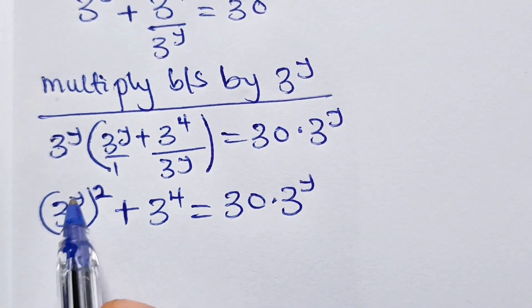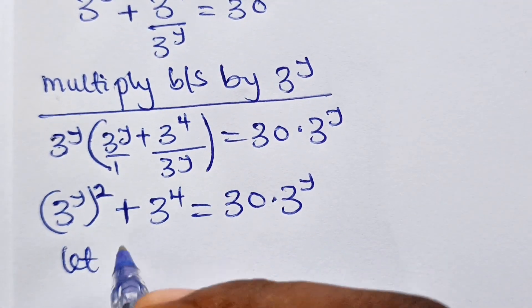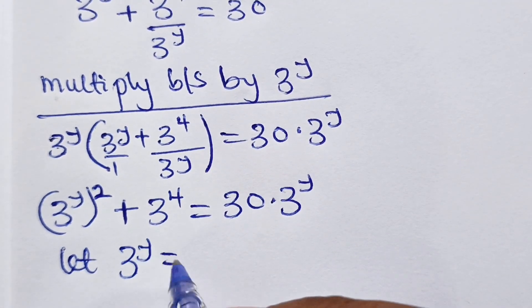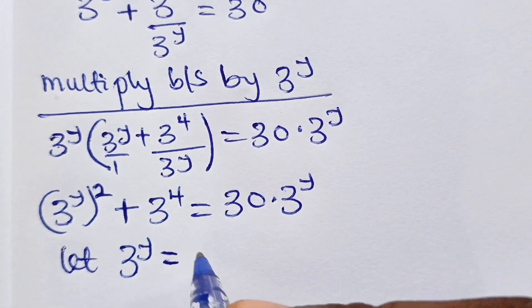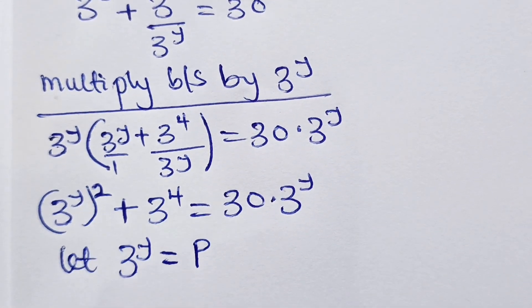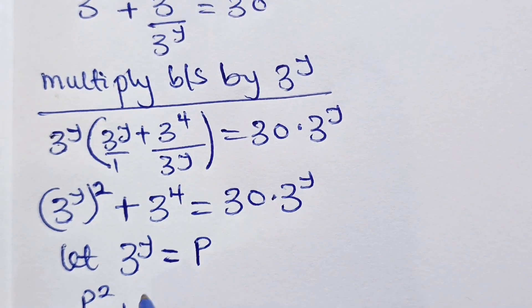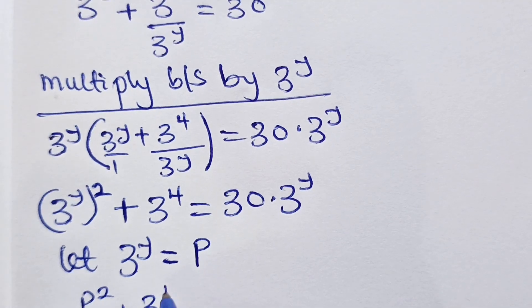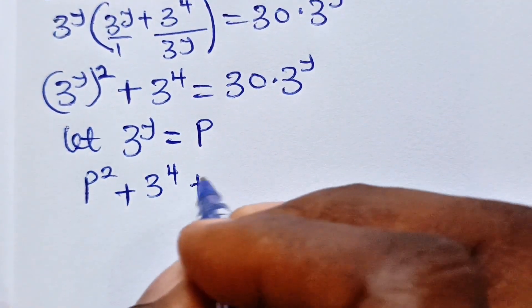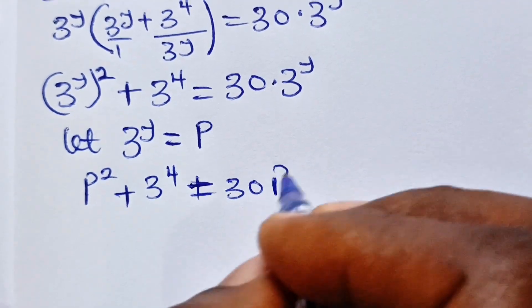Now let 3^y be equal to p. That means what we have is p² + 3⁴ = 13p, or equivalently p² + 81 = 30p.